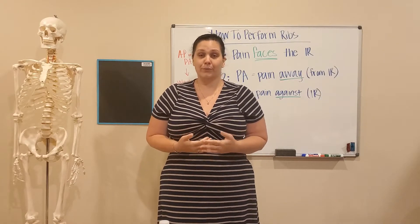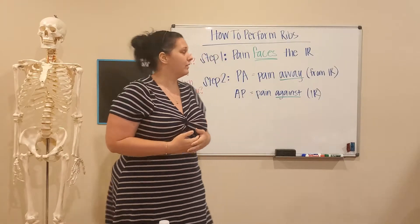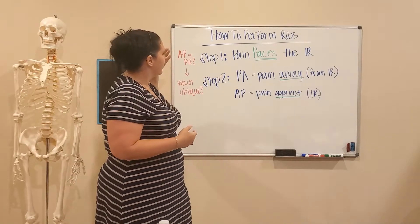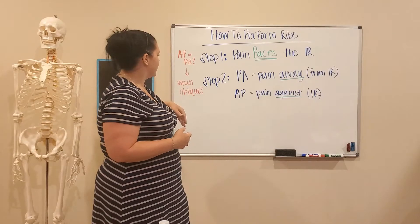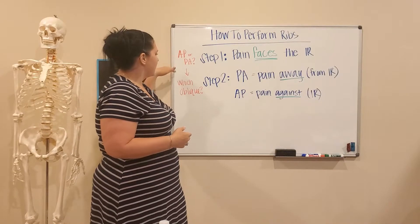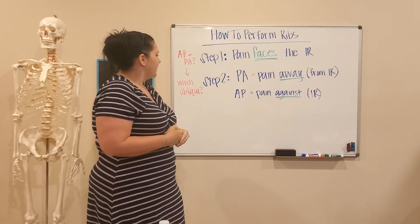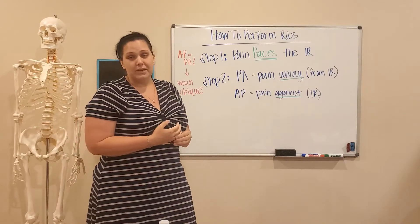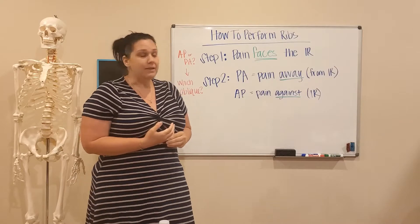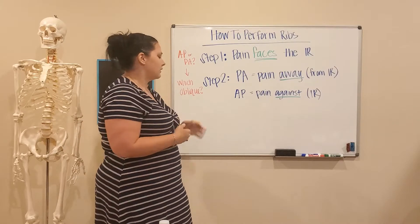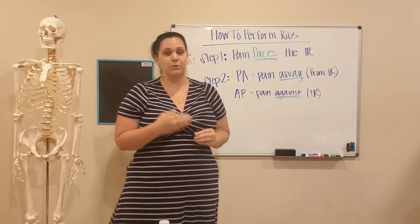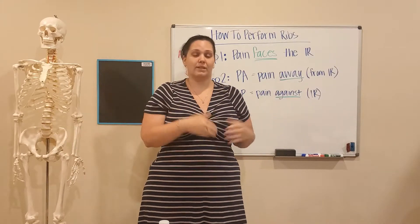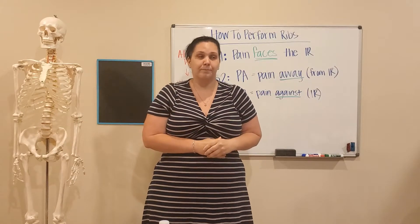It's a two-step process. Step one tells you whether you're working AP or PA, and step two tells you which oblique you would do with the associated AP or PA.